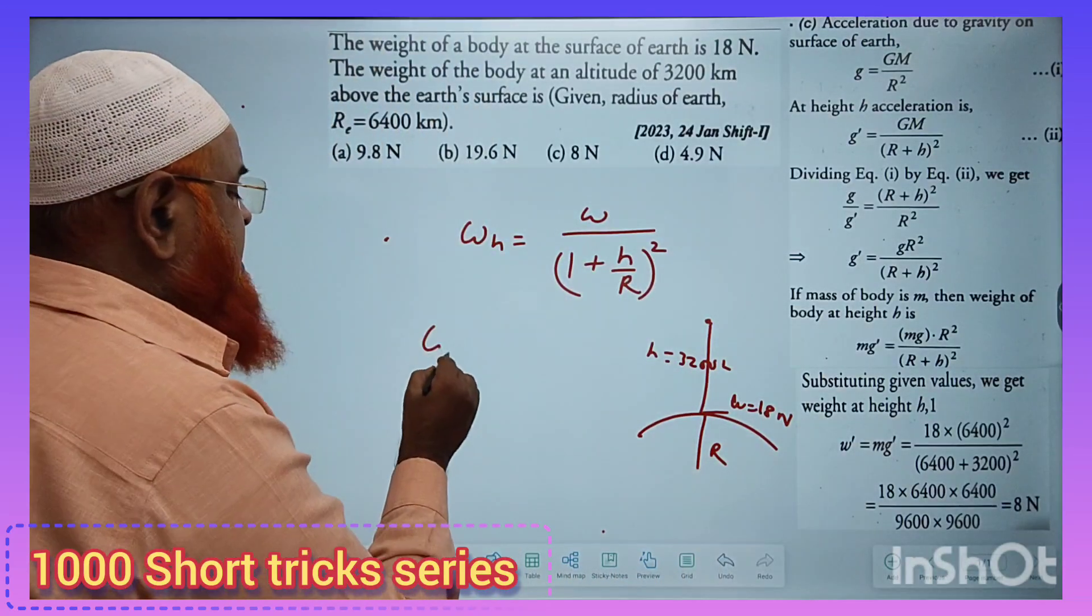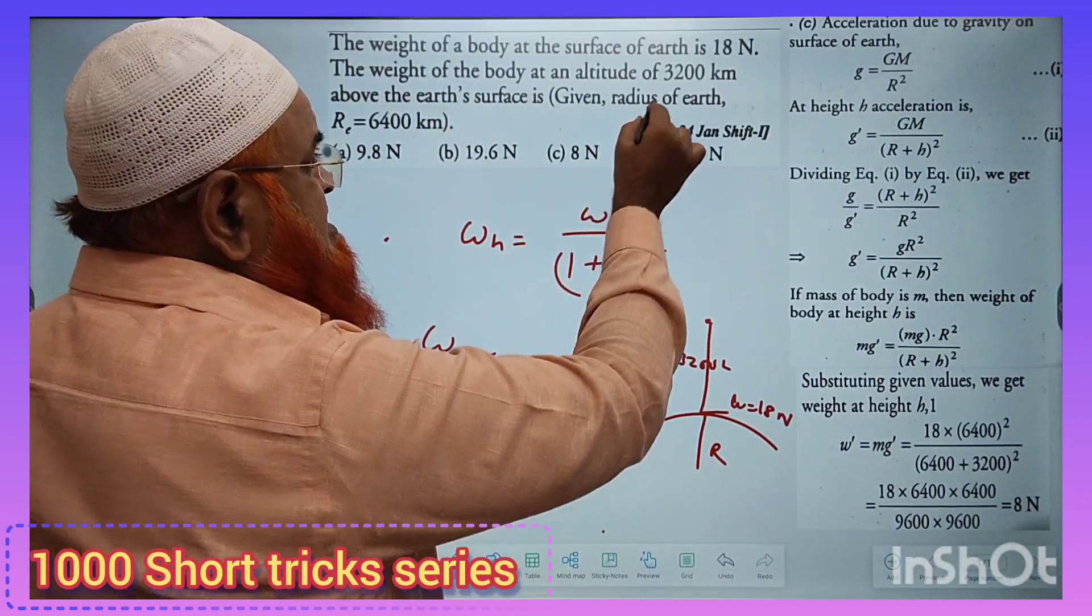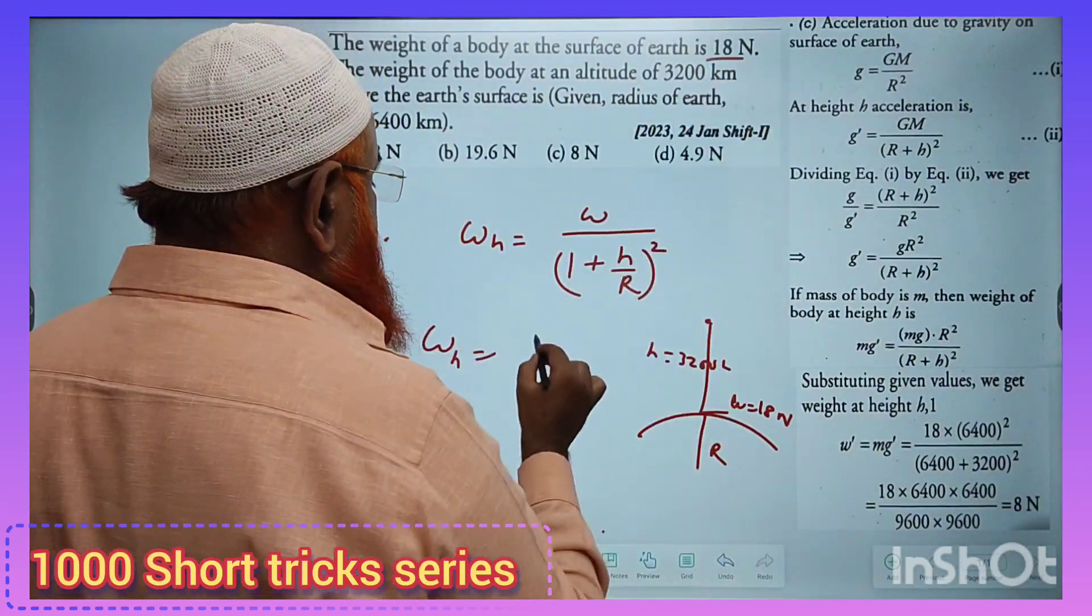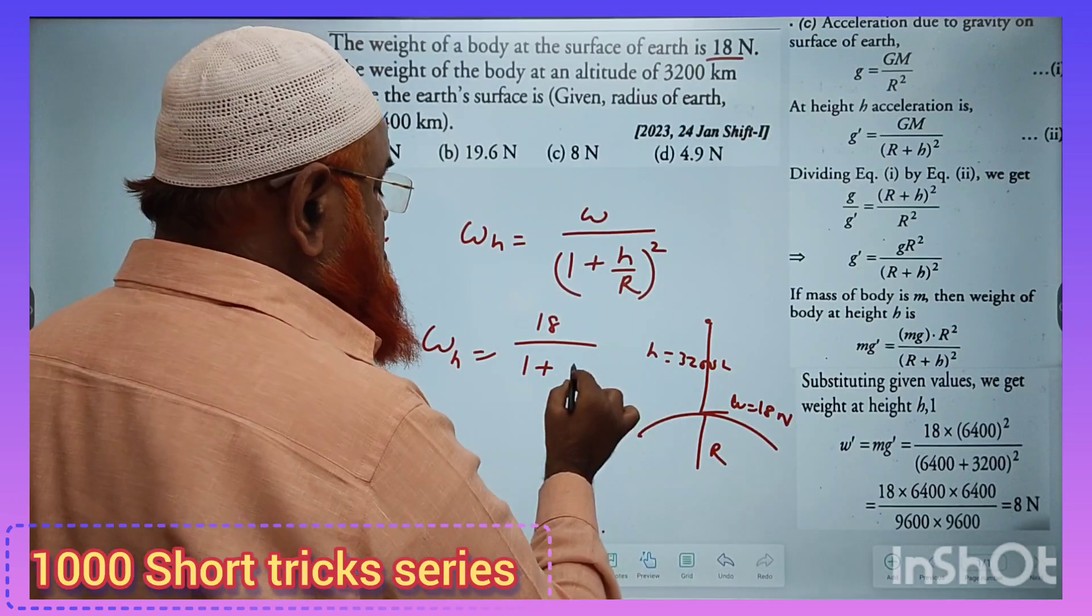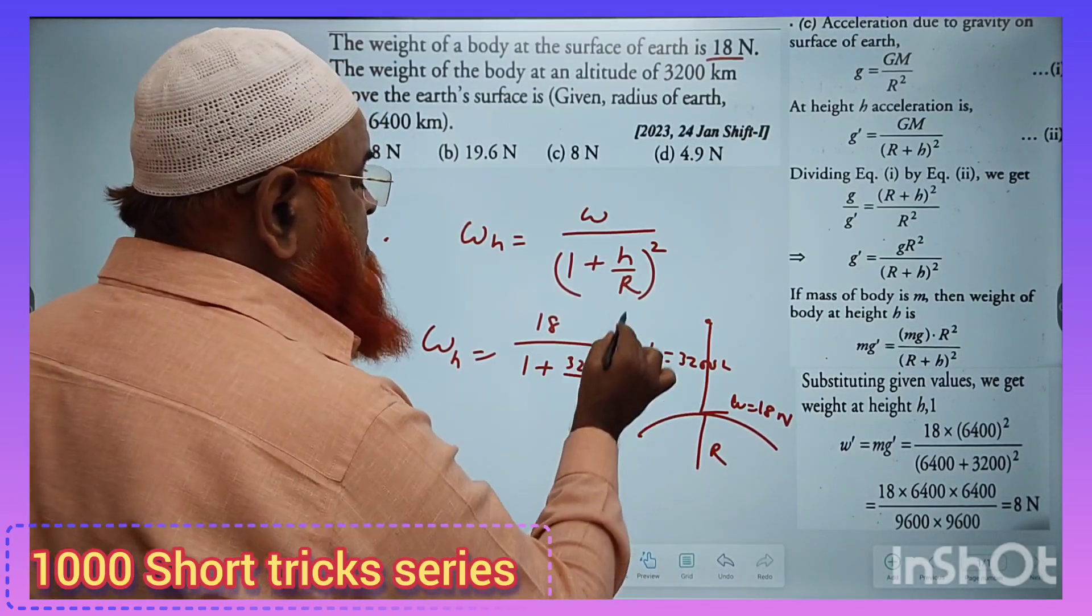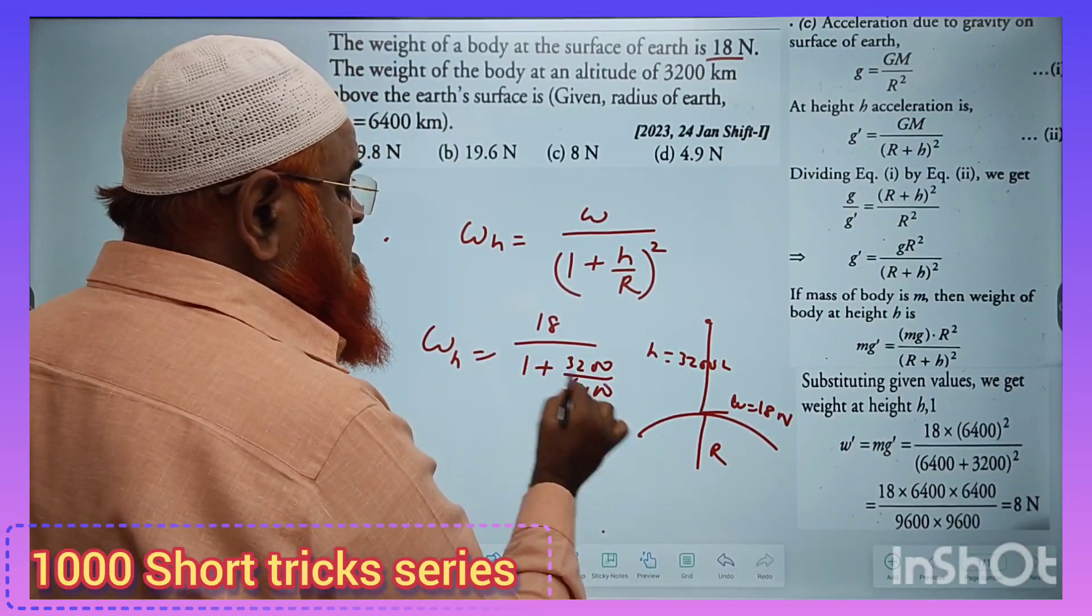So let us see here now. Weight at certain height is equal to weight on the surface, which is 18 newtons, divided by 1 plus h. h is how much? 3200 divided by r which is 6400.